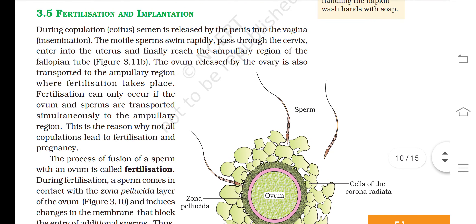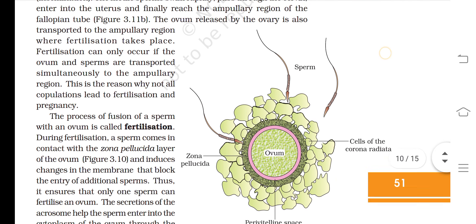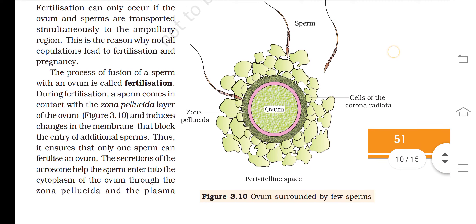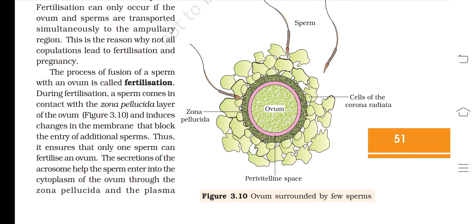During copulation or coitus, semen is released by the penis into the vagina — insemination. The motile sperms swim rapidly, pass through the cervix, enter the uterus, and finally reach the ampullary region of the fallopian tube. The ovum released by the ovary is also transported to the ampullary region, where fertilization takes place. Fertilization can only occur if the ovum and sperms are transported simultaneously to the ampullary region.